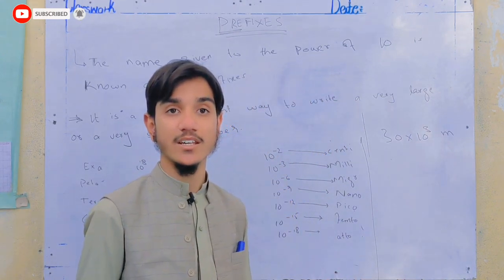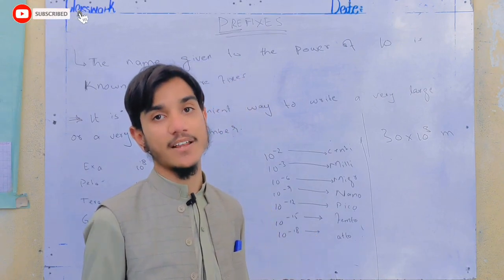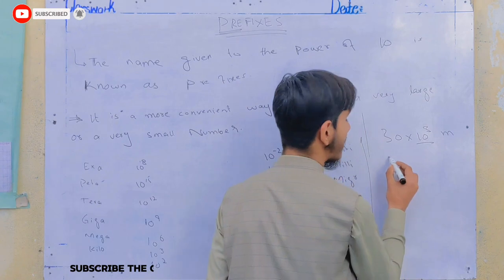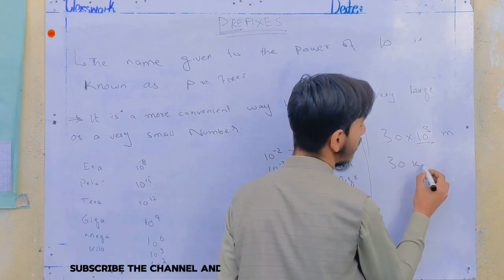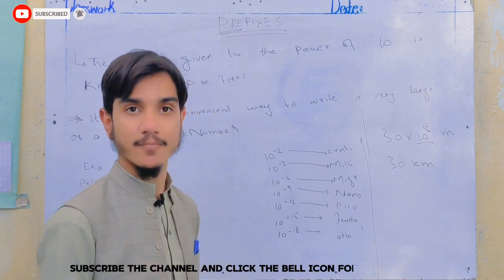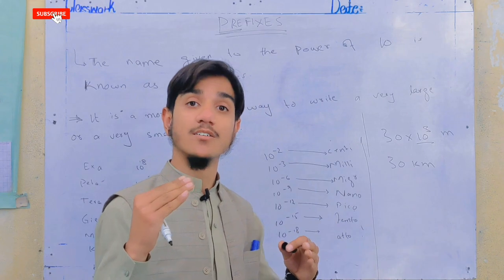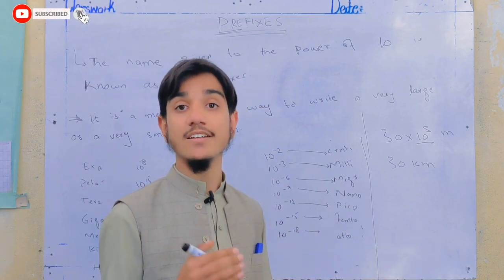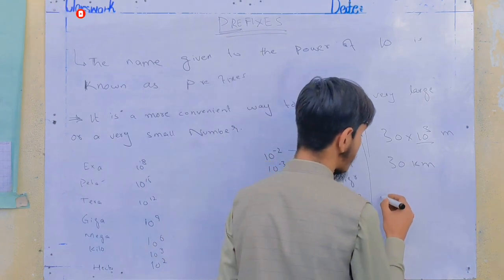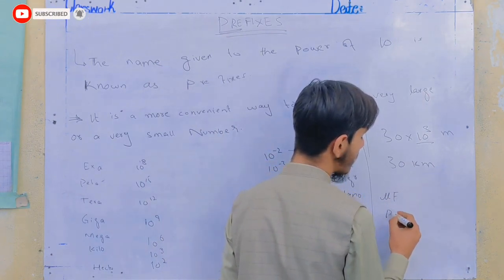Now, for another example, consider a capacitor. Capacitors often have values given in microfarad or picofarad. These are small units. The unit microfarad and picofarad are both very small units used in electronics.